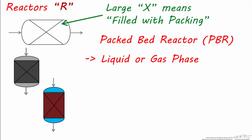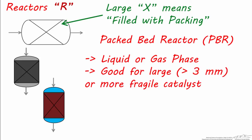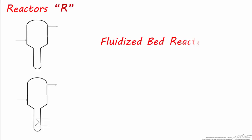This type of reactor can be used for liquids and gases and is ideal for large or fragile catalysts, usually over 3 millimeters in diameter. Let's look at two additional types of reactors and their symbols. For catalyst particles that are smaller than 3 millimeters, it's a good idea to consider using this type of reactor, a fluidized bed.